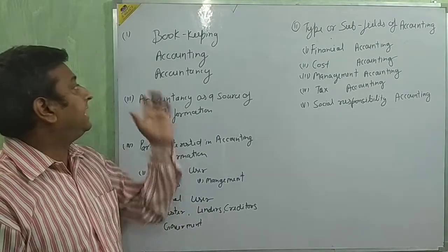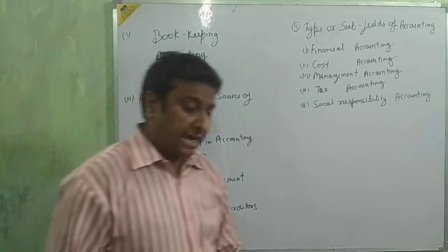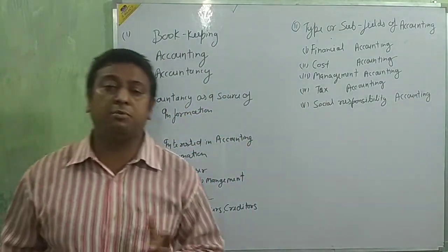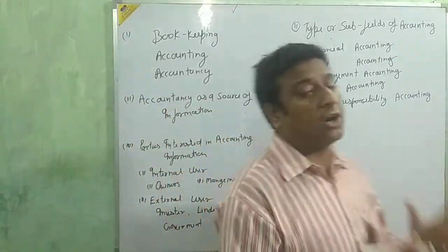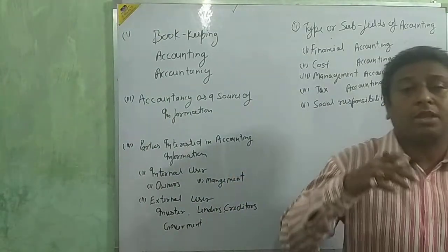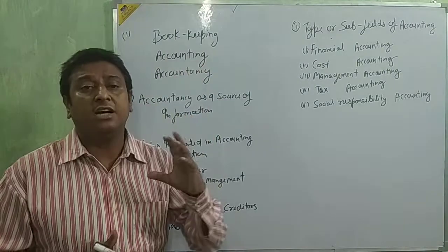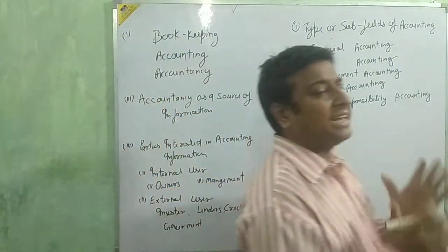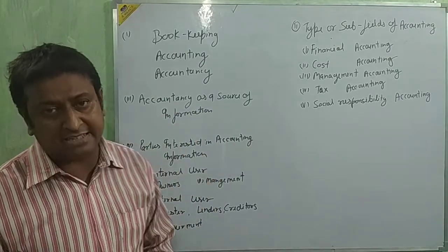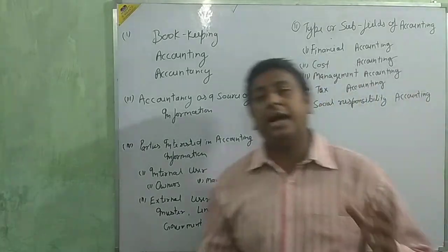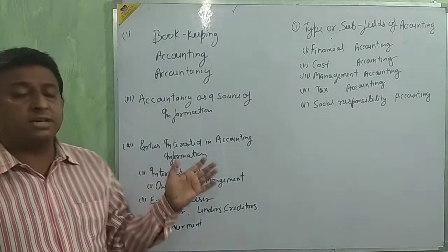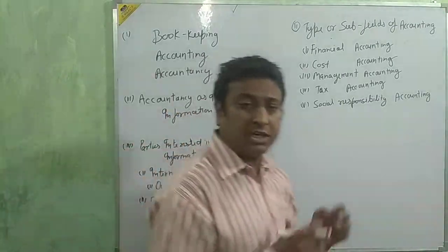Accounting is much bigger than bookkeeping. Bookkeeping is the first part — the primary part of accounting. In accounting, we take all entries from the journal, then post them in the ledger, then take the balance of that ledger, then make the trial balance, and interpret the data. We do trading and balancing and take the information, then communicate that information to our owners, managers, or other persons. That is called accounting.